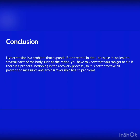Conclusion: hypertension is a problem that expands if not treated in time, because it can affect several parts of the body such as the retina. It is better to take all prevention measures and avoid irreversible health problems.